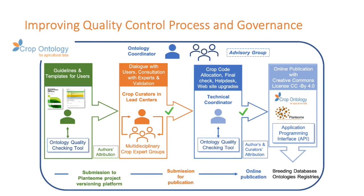Because the crop ontology is a collaborative product, we need to improve the quality control process to bring trust into its content and develop governance documentation. We had a meeting in May with the main stakeholders. The resulting schema covers the process from the curator to online publication using our guidelines, quality checking tools, and making attribution. All of this will soon be described in a document we are preparing with the help of Tom Hazekamp.